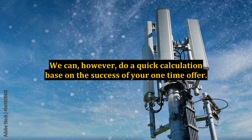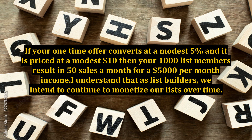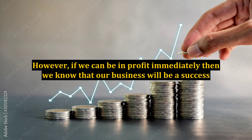We can, however, do a quick calculation based on the success of your one-time offer. If your one-time offer converts at a modest 5% and it is priced at a modest $10, then your 1,000 list members result in 50 sales a month for a $5,000 per month income. As list builders, we intend to continue to monetize our lists over time. However, if we can be in profit immediately, then we know that our business will be a success.